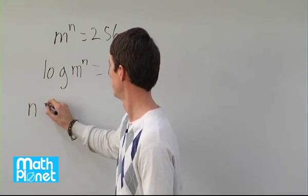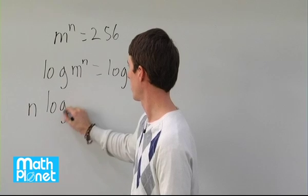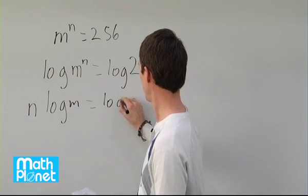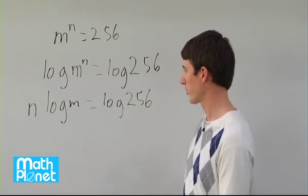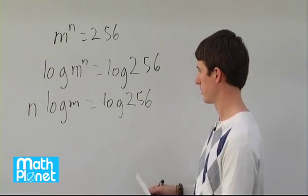That brings the n down in front: n times log m equals log 256. Now we can divide both sides by log m.